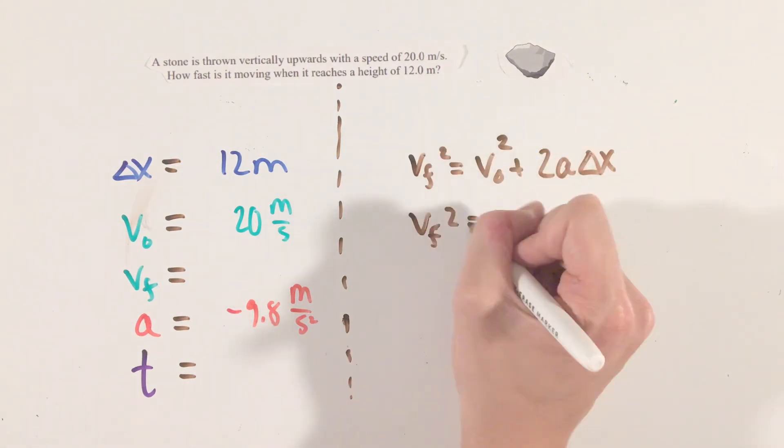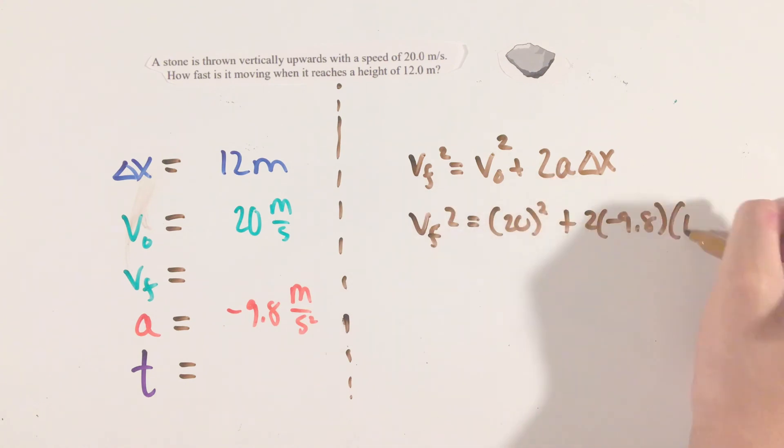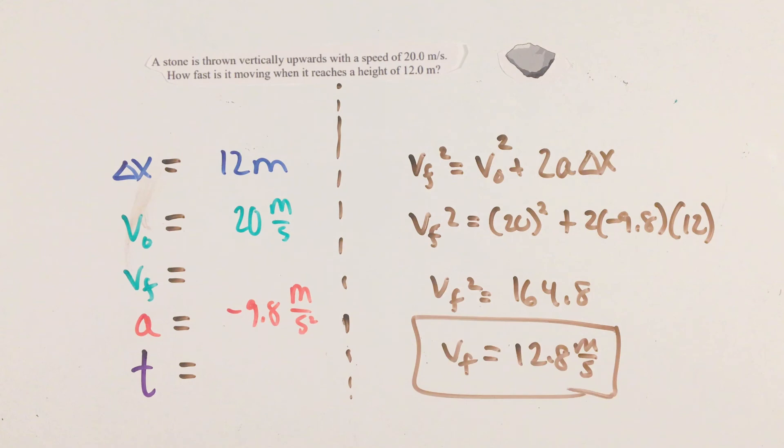In this case, because our stone is moving upwards, we can call gravity negative 9.8 meters per second squared, to compensate for the opposite directions.